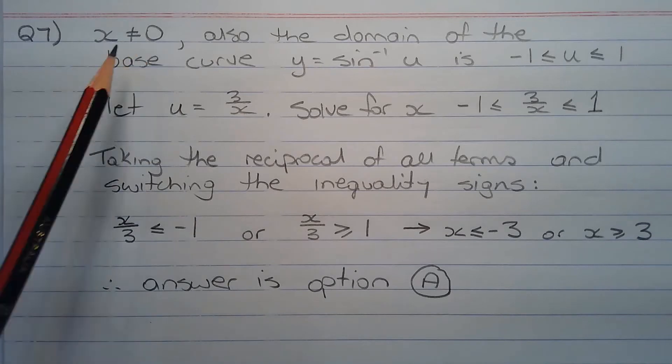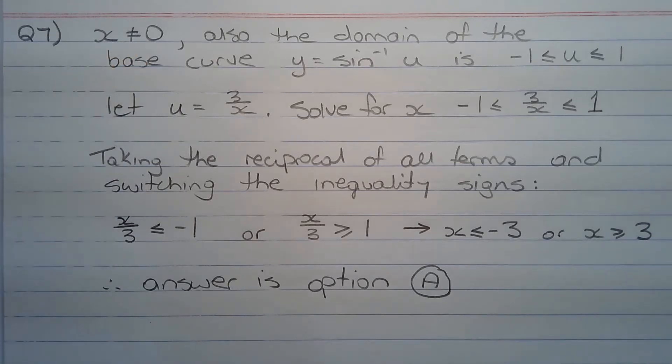Firstly, x cannot equal 0, since 3 over x is undefined when x equals 0. None of the options show x equals 0 as part of the solution set.